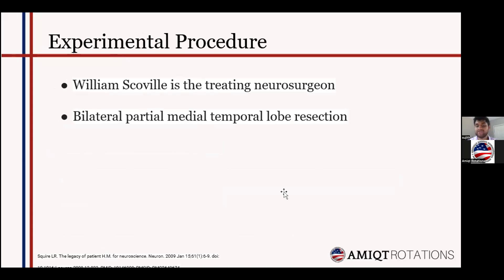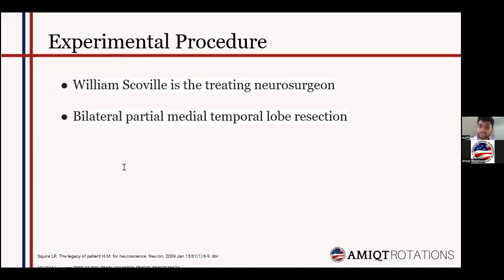HM was treated by William Scoville, a neurosurgeon, who offered HM an experimental procedure he had previously carried out in psychotic patients. The surgery proposed was a bilateral partial medial temporal lobe resection. This was done with the approval of the patient and his family. HM was the first epileptic patient to undergo this procedure, which had previously been performed only on psychotic patients.